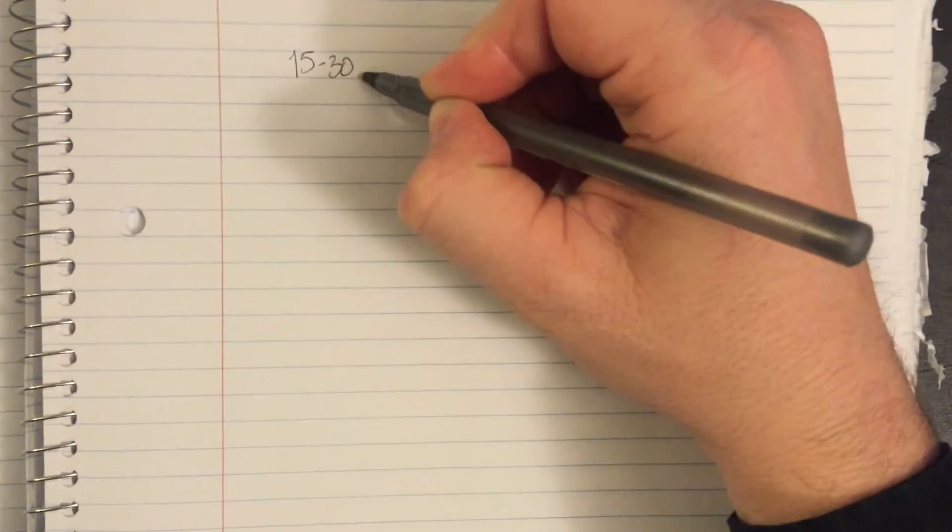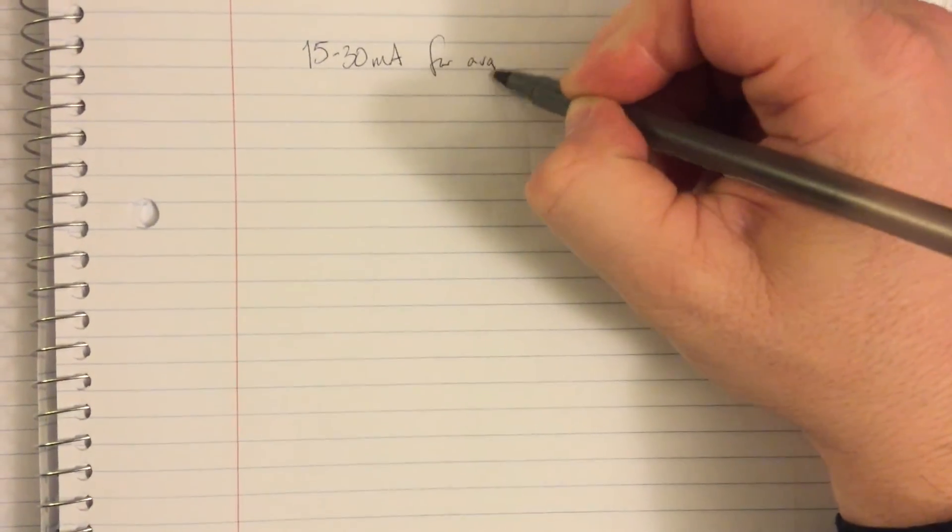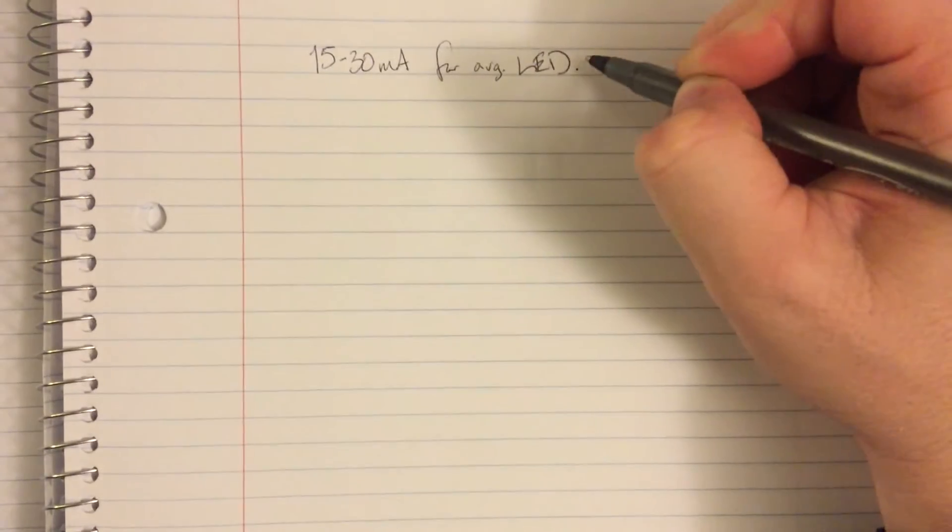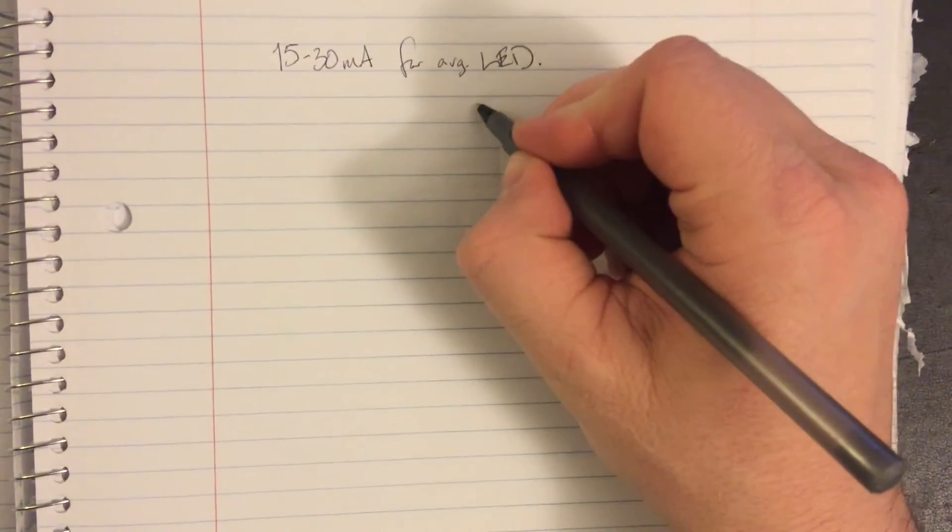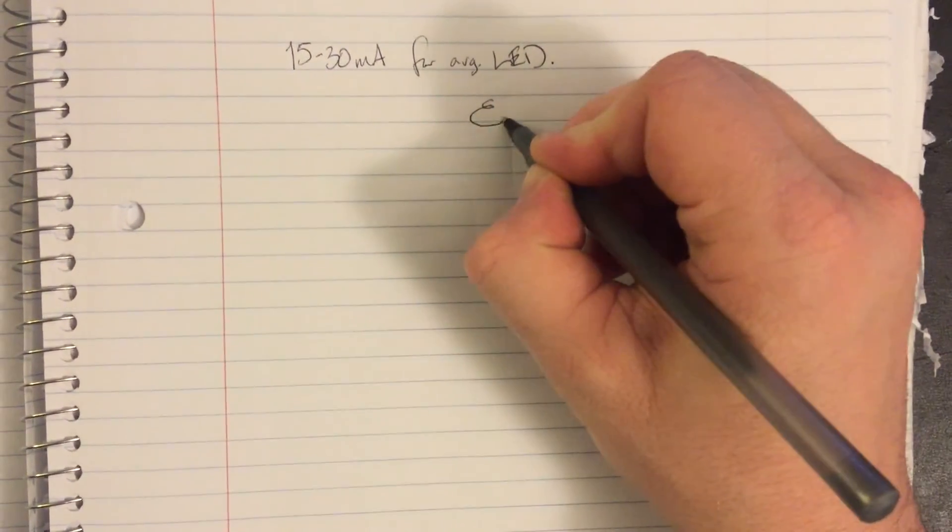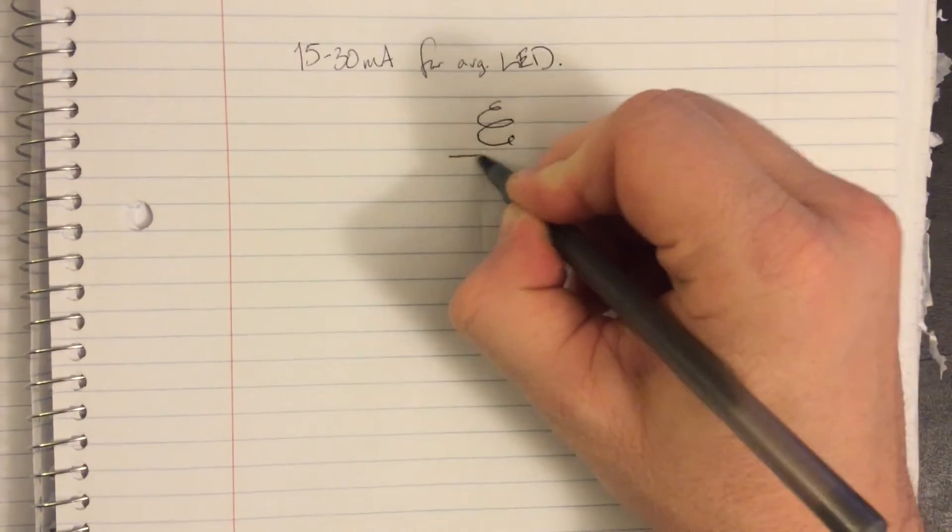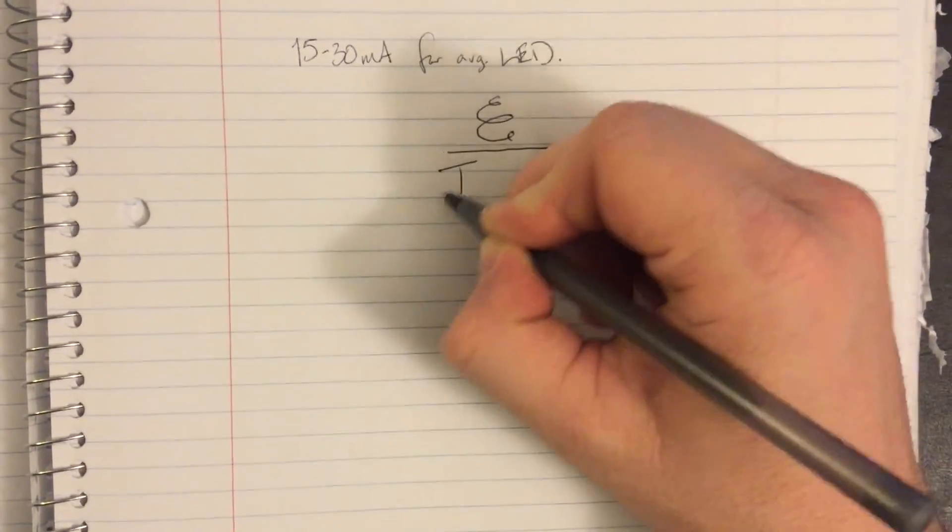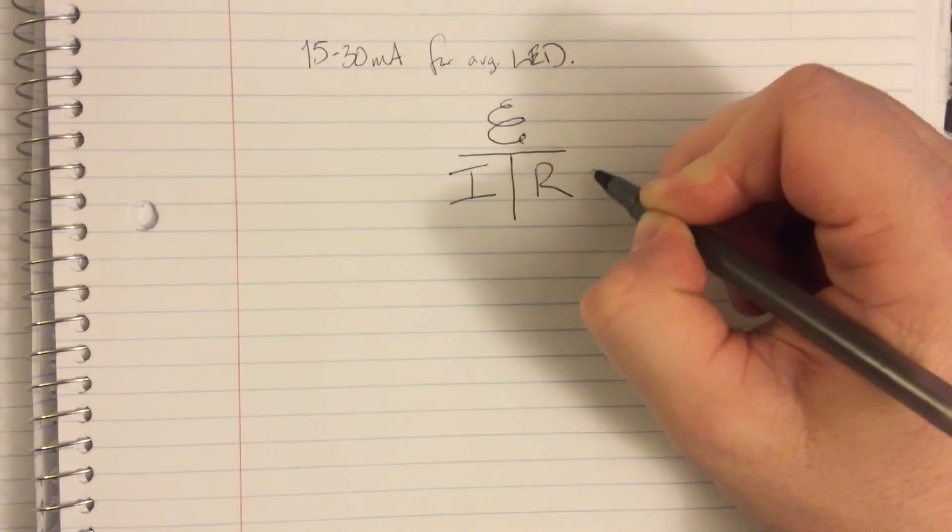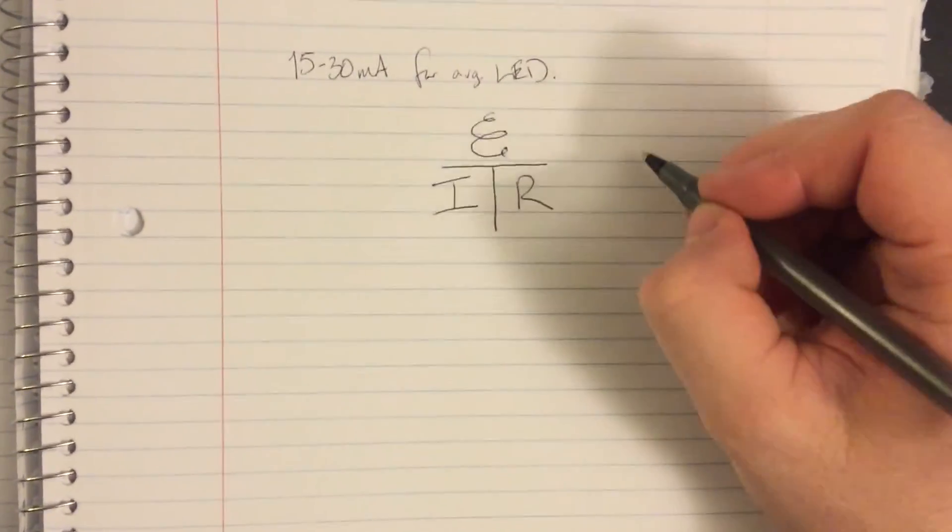LEDs can survive and function at anywhere between 15 and 30 milliamps. Now 30 is really bright, 15 is fairly dull. You're going to want to operate somewhere really in the 20 to 25 range, but if you calculate the resistance required to operate between 15 and 30, you now have a range from which resistors can be selected.